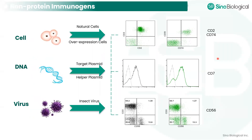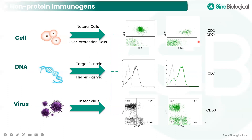For some molecules, the protein is not easy to obtain, so there are other ways using non-protein immunogens for antibody generation. These include cells — which could be natural cells or overexpression cells — DNA containing the targeting sequences, or viruses which have the targeting sequences for immunization. Several molecules have been successfully generated by these types of antigens for FACS applications.